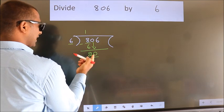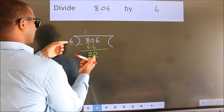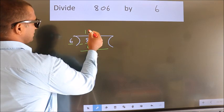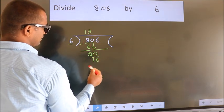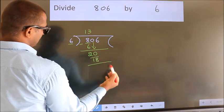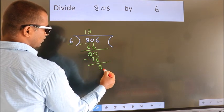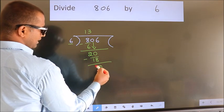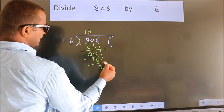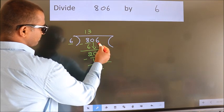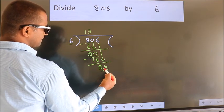A number close to 20 in the 6 table is 6×3=18. Now we subtract — we get 2. After this, bring down the beside number. So 6 down, so 26.